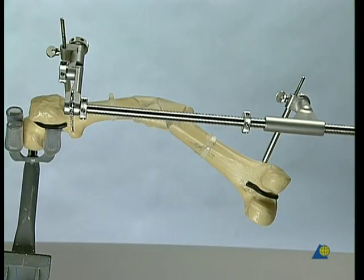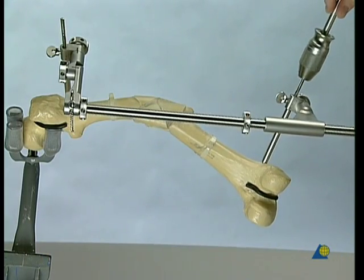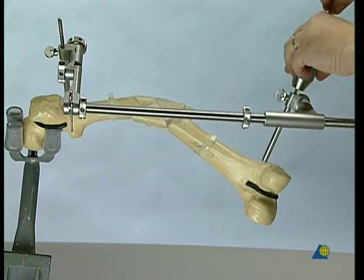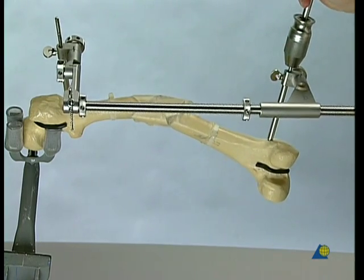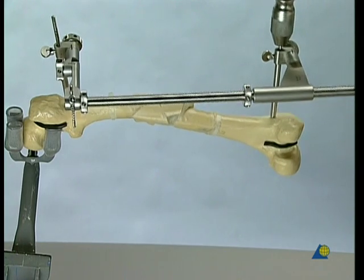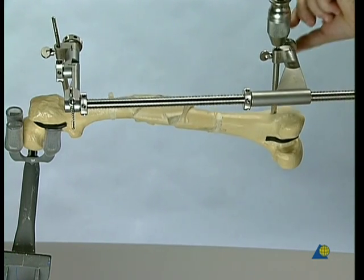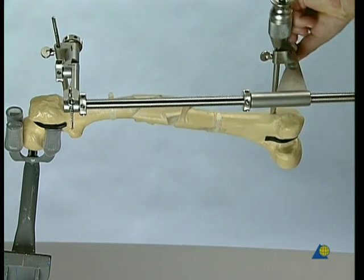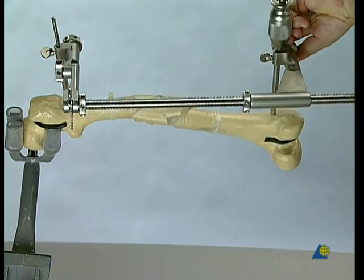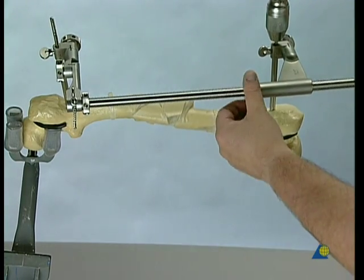To position the distal main fragment relative to the proximal fragment, the universal chuck with T-handle may be used. The joint on the sliding carriage must be tightened before the fragments can be distracted by means of the knurled nut and the threaded rod.